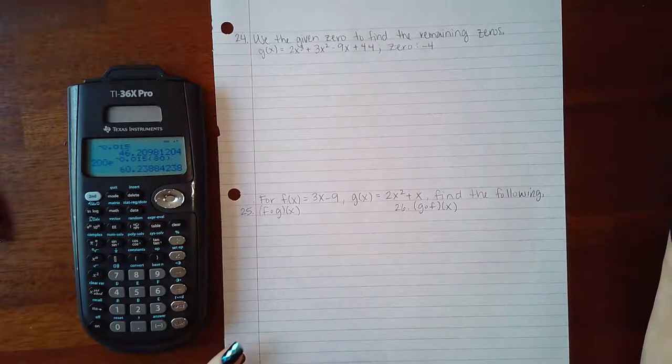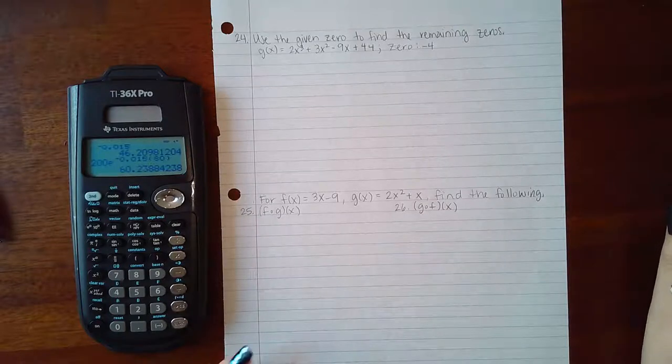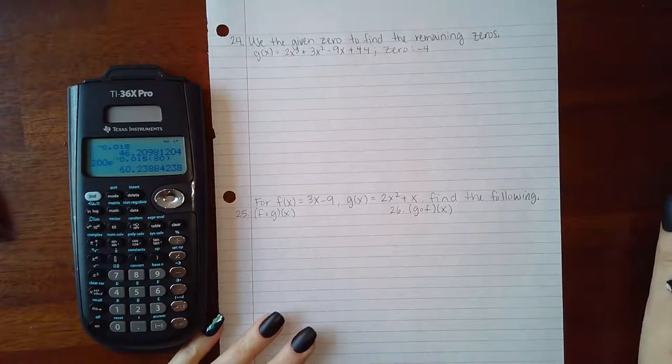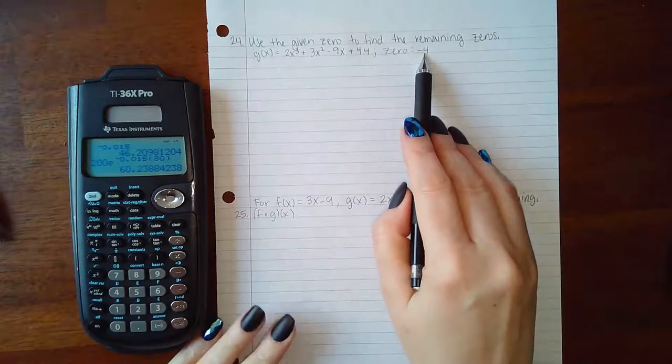Here we have problem 24 through 26. Number 24 says use the given zero to find the remaining zeros. Here's the polynomial we were given and here's the zero we were given.